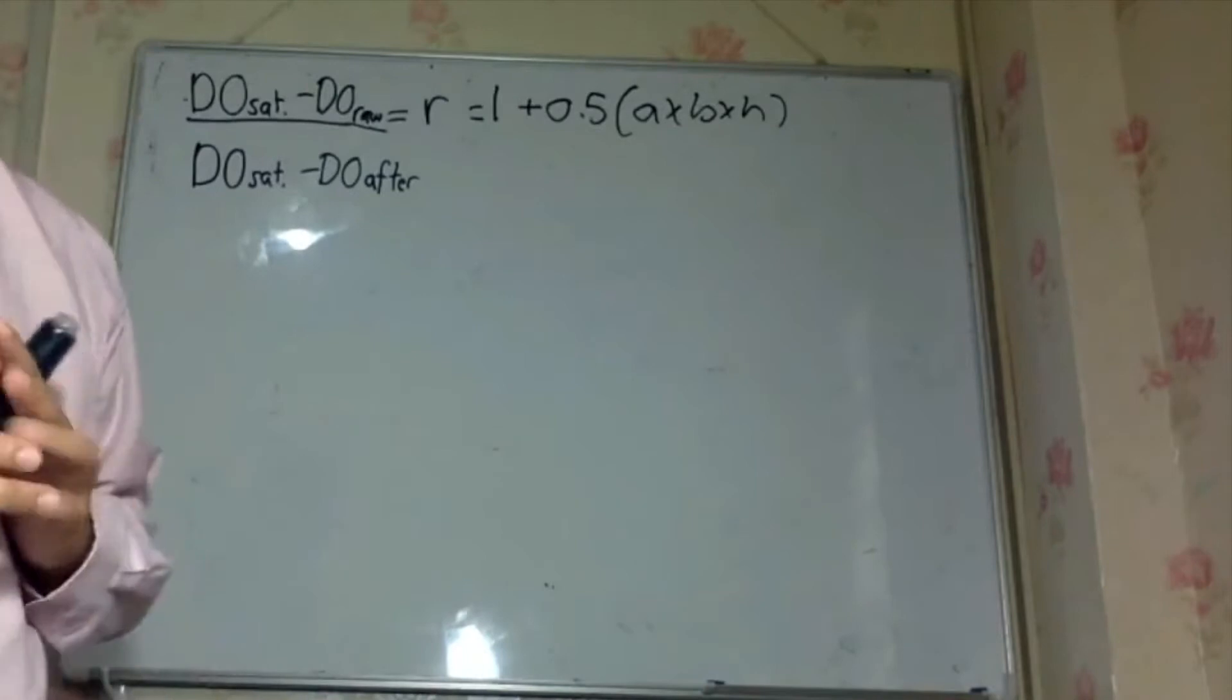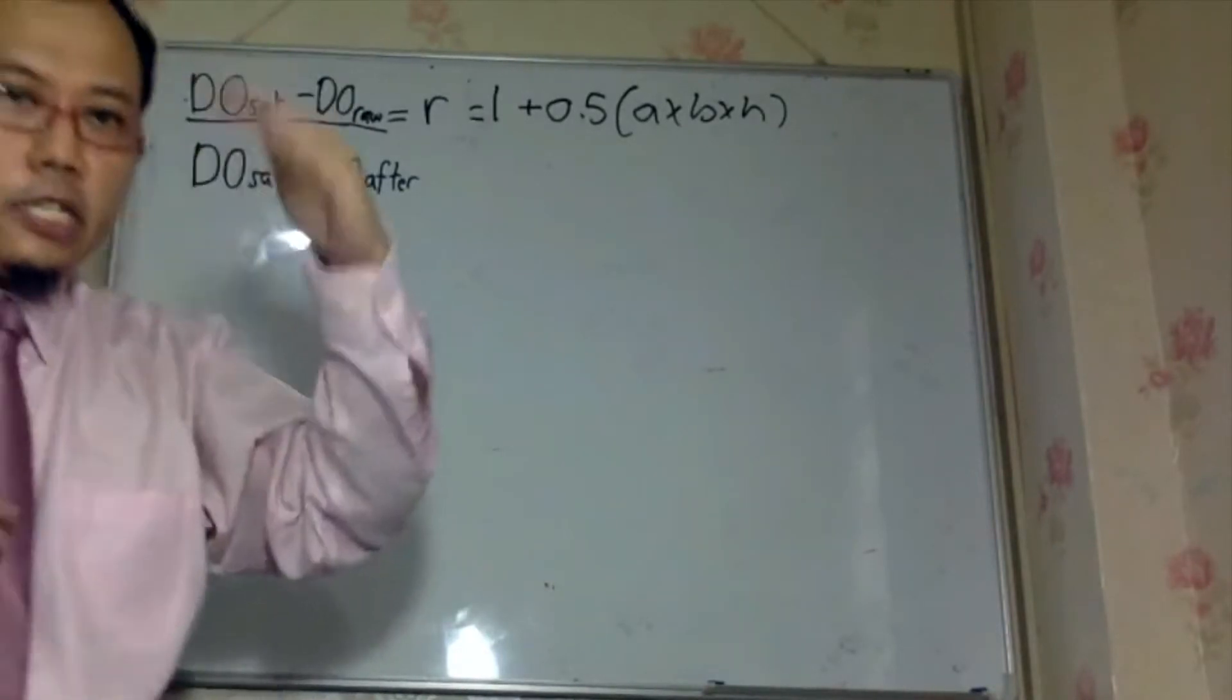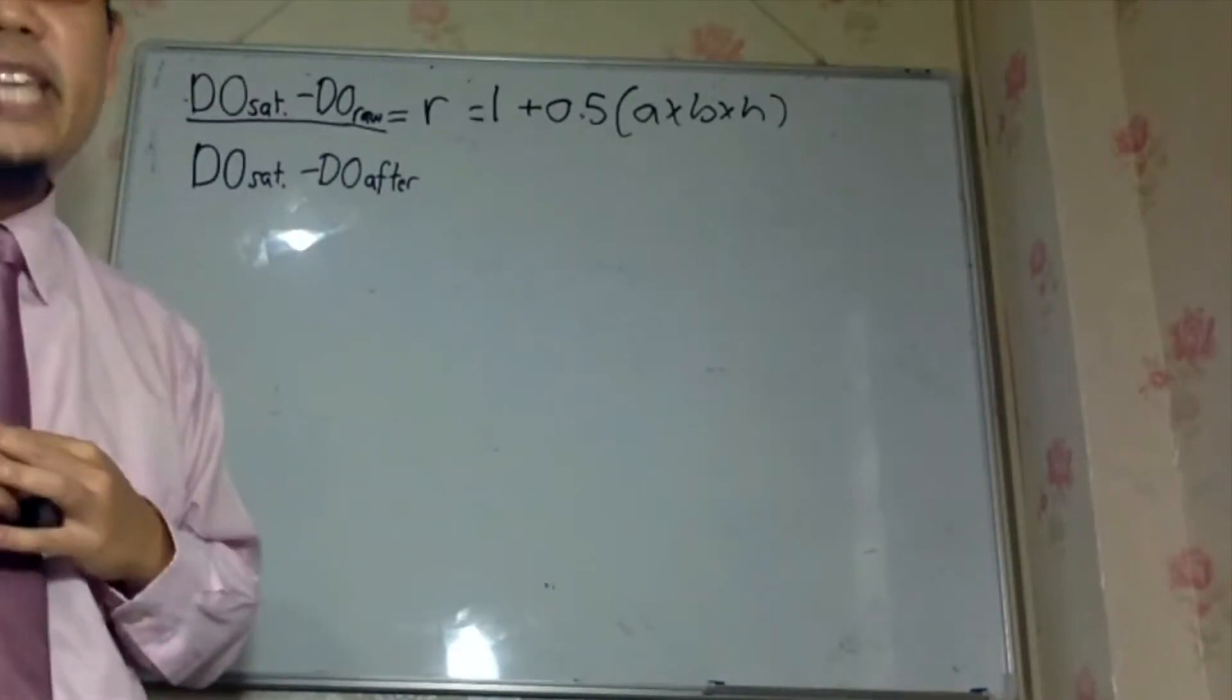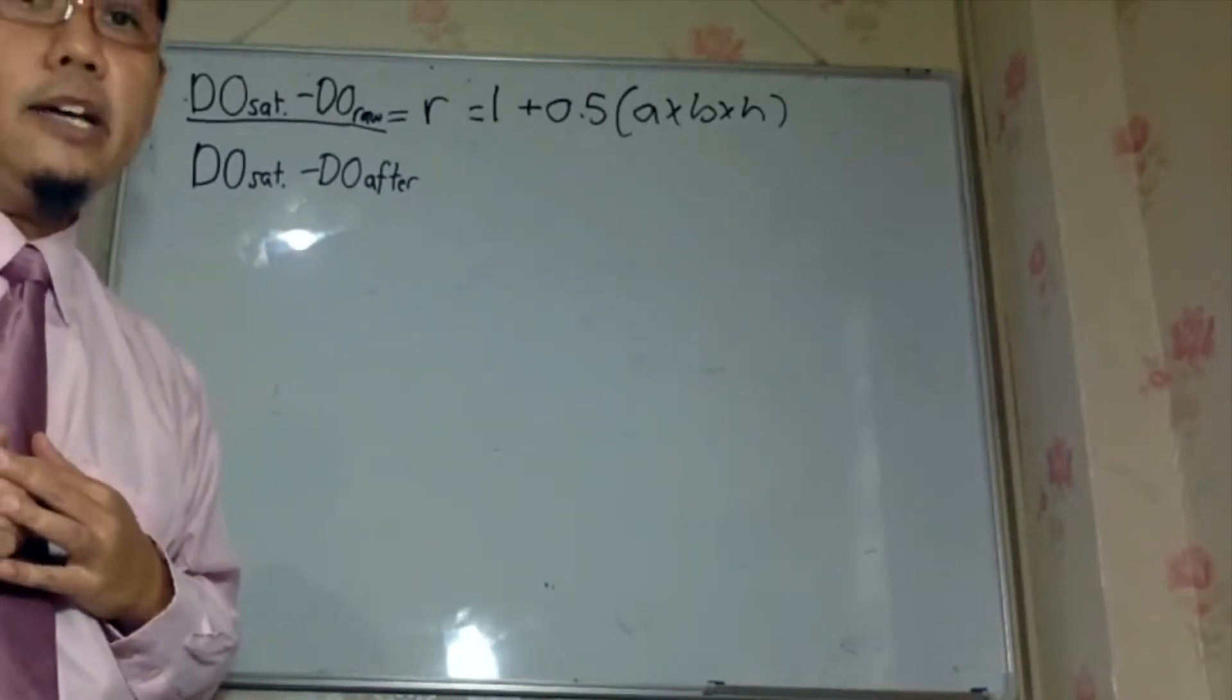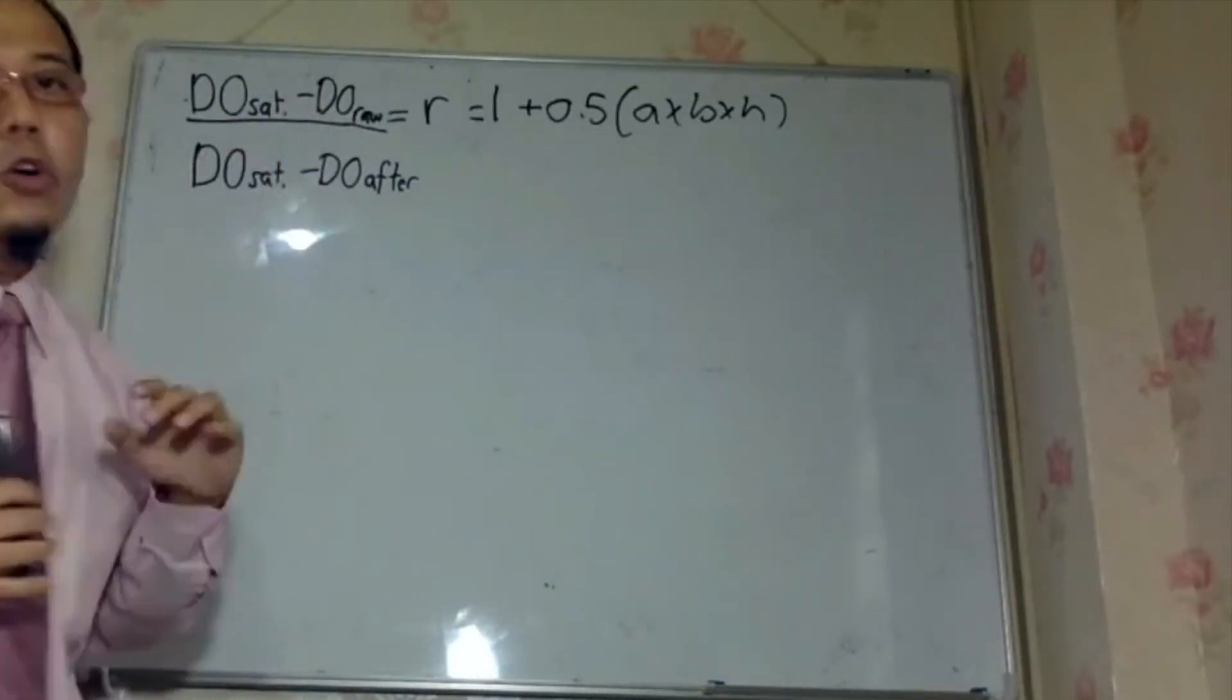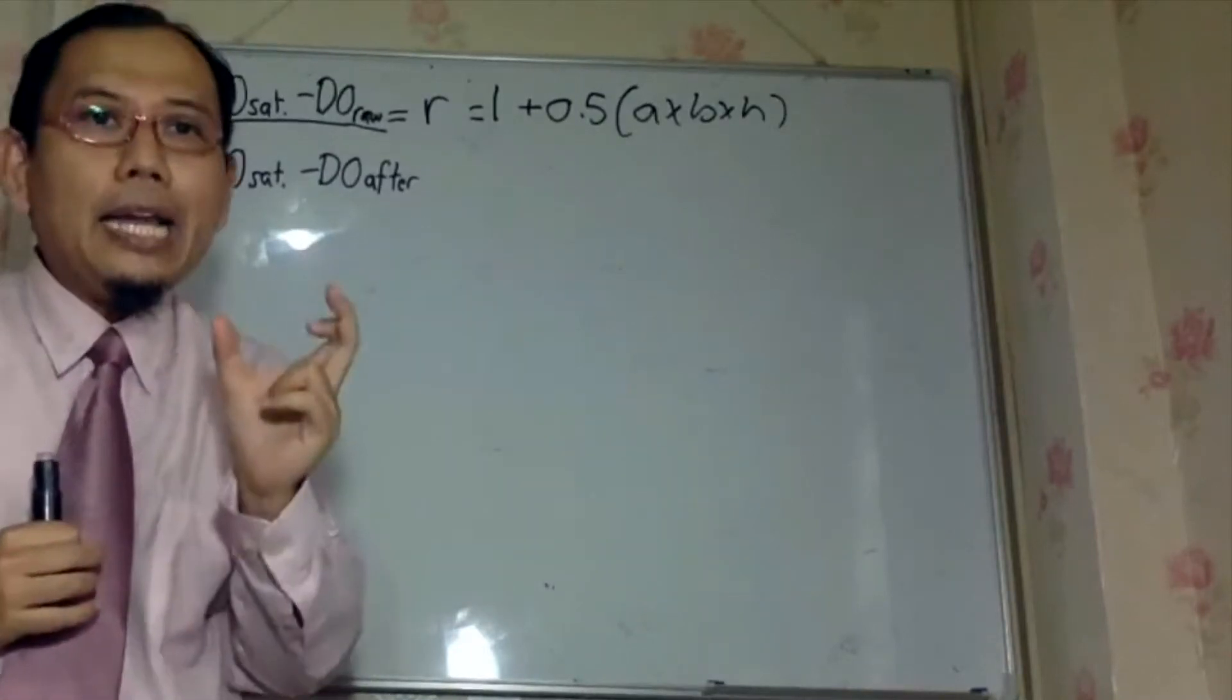So it is the ratio. If you look at the description in your notes, it says the ratio of oxygen deficit just before the aerator to that just after the aerator. So DO saturation minus DO raw, so the oxygen deficit, kehilangan oxygen.